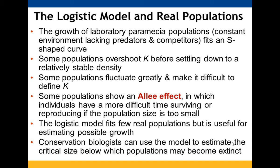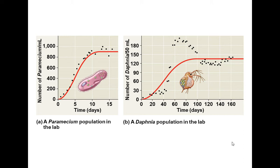Depending on conditions, some populations fit the J-curve and others fit the S-curve. Some populations overshoot the K value and then come back down. Others show the Allee effect, where they cannot survive or reproduce effectively if their size is too small. Neither model fits all populations perfectly, but the logistic model is more realistic and is one way conservation biologists estimate the minimum population size needed before a population would go extinct. Paramecium data closely fits the logistic model while Daphnia data is more variable.